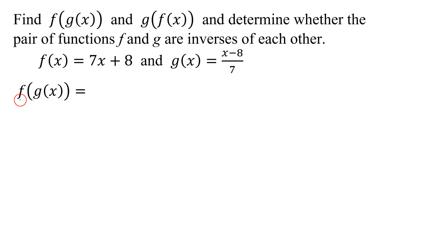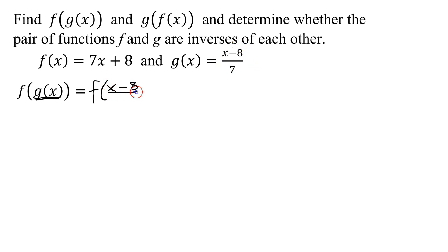So first, we need to find f of g of x. Remember, we always work from the inside out, so I'm going to replace g of x with its definition. So f of g of x equals f of — instead of g of x, I'm going to put x minus 8, all divided by 7. So now we need to evaluate f at x minus 8 divided by 7.